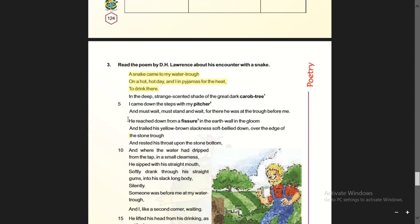The snake reached down from a fissure in the earth wall in the gloom and trailed his yellow-brown slackness soft belly down over the edge of the stone trough. Fissure means a break in the earth wall. In the gloom, in darkness, the snake trailed slowly with his yellow-brown loose skin.